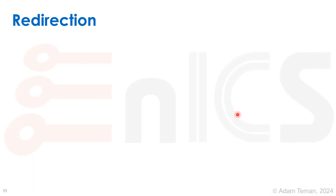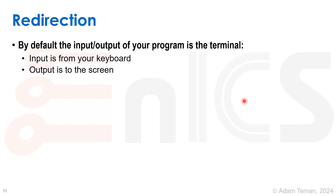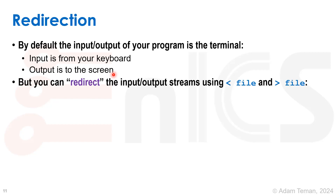The next issue is redirection, and this is one of the basics of Unix. You usually have something called standard input and standard output. The standard input and output of your program are basically the terminal. Input is provided by the keyboard typed into the prompt, and that gives input to whatever program we're running. The output is sent to the screen. But sometimes we don't want input from the keyboard or output to go to the screen, and therefore we can use redirection.